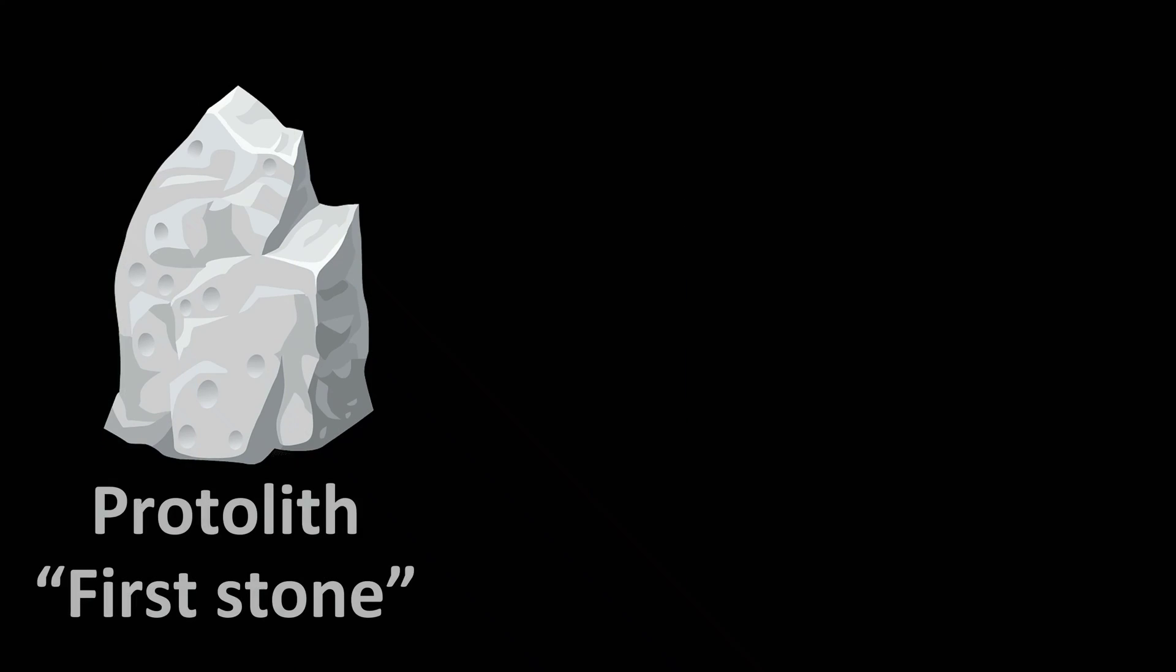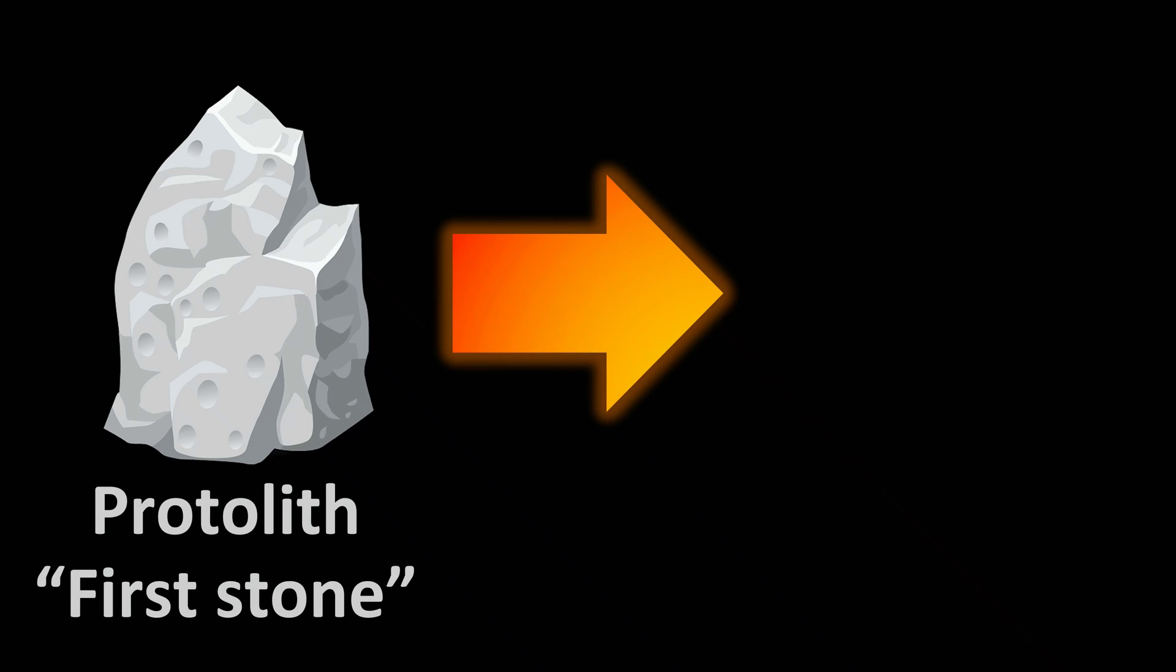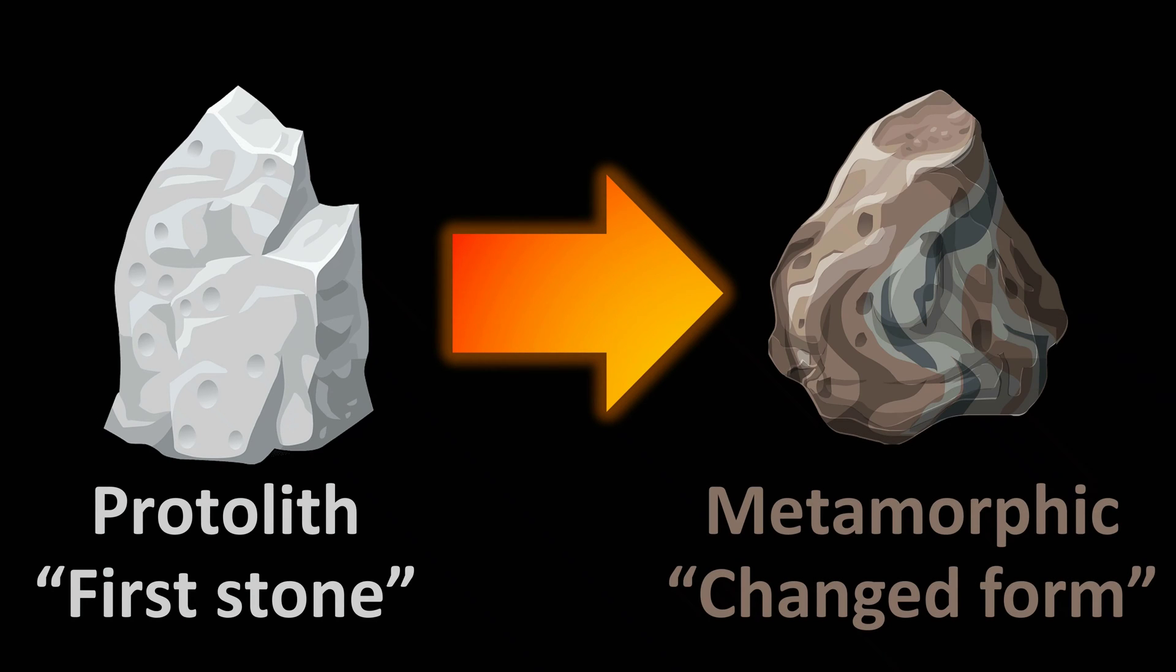Metamorphic rocks are some of the most interesting and confusing rocks. This is because metamorphic rocks aren't the result of one single process, like some igneous and sedimentary rocks are. Metamorphic rocks are really the result of two processes. You start with what's called a protolith, which means first stone, and then you end up with a rock called a metamorphic rock. Metamorphic means changed form. So a metamorphic rock is literally a rock whose form has been changed. The agents of this change in metamorphic rocks are heat and pressure.